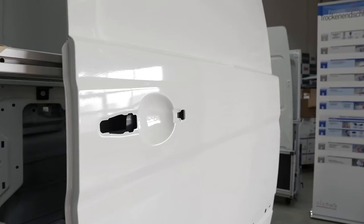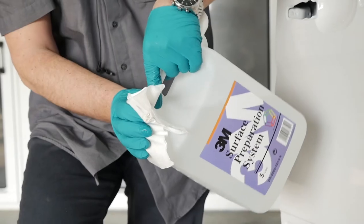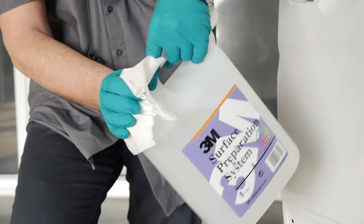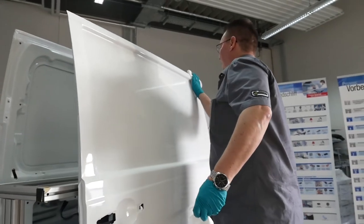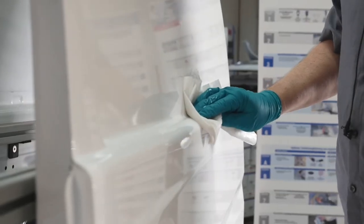Cleaning the surface of the substrate is essential before starting the application. Pour a small amount of 3M Surface Preparation System onto a lint-free cloth and wipe across the panel in a smooth action.